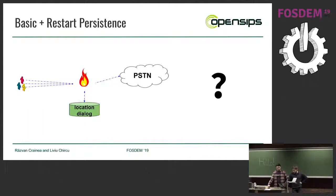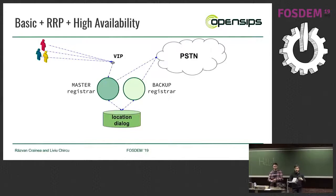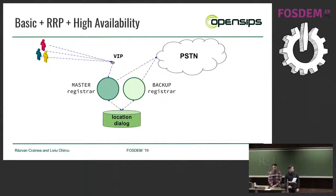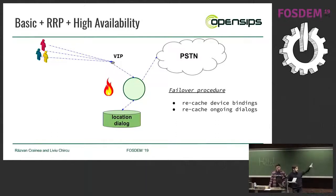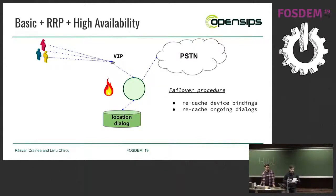We can take this one step further and add high availability. We throw in a backup node, use a shared database, put a virtual IP on top, and instruct all endpoints to register to the VIP — using some sort of VRRP protocol. KeepaliveD handles the moving of the IP. The plan is that when the active node fails, there's a failover procedure: reload all dialogues from the shared database, recache all registrations, and the service will survive.